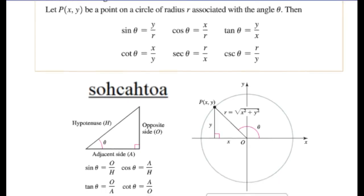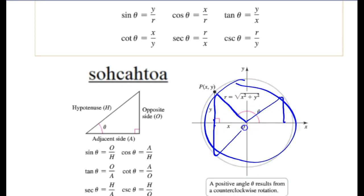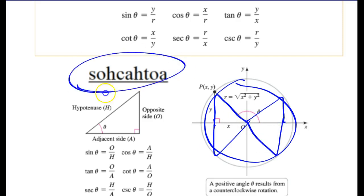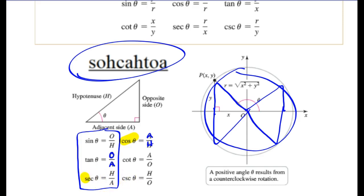If you remember, the basics of trig were the unit circle and reference bowtie triangles. SOHCAHTOA stands for sine being the relationship of opposite over hypotenuse, tangent is opposite over adjacent, and cosine is adjacent over hypotenuse. And then the reciprocal functions — the reciprocal of cosine is secant, and the reciprocal of sine is cosecant. So opposite over hypotenuse flips to hypotenuse over opposite.